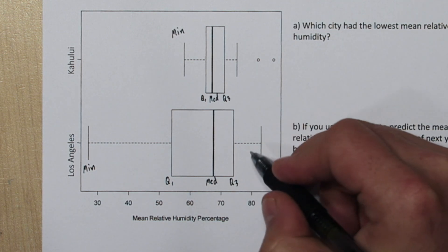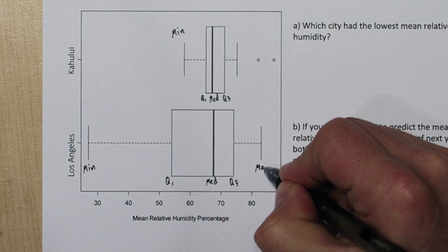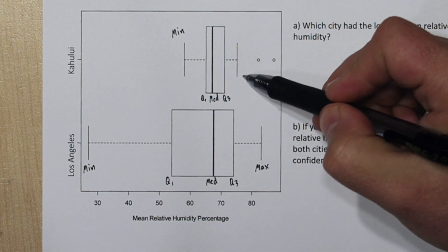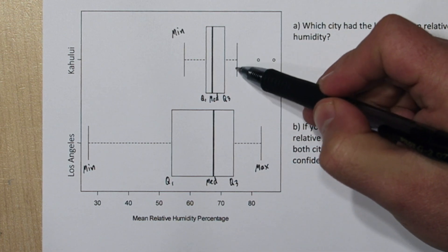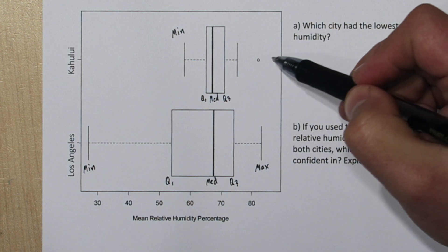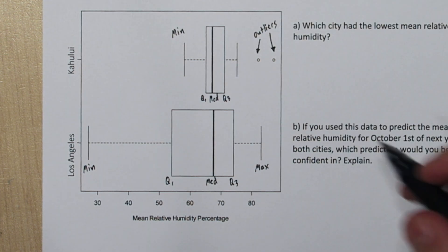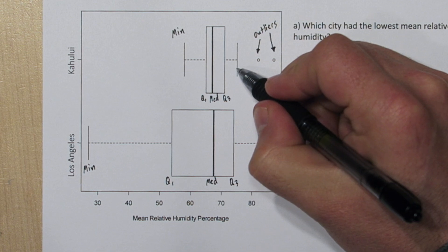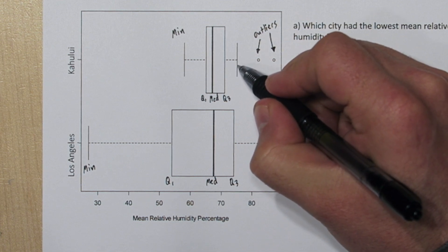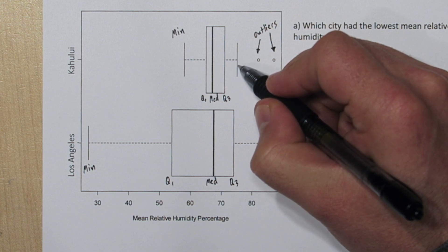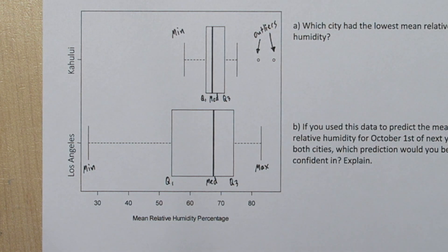Here we have our maximum for Los Angeles. On Kahului we have what appears to be our maximum, and then we have these two little dots — these are outliers. So what this upper right end of the whisker represents is the highest mean relative humidity percentage observed that was not an outlier. It's not the maximum, but it's our maximum non-unusual observation.